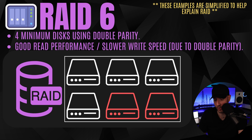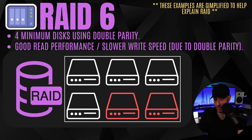RAID 6 requires a minimum of four disks and uses double parity, meaning you can lose two hard drives without losing any data. Using our five-drive example, if you lose two of them you're still fine — you have to lose at least three to lose the entire storage pool. From a performance perspective, RAID 6 has good read performance but slower write performance than RAID 5, because you're writing double parity.